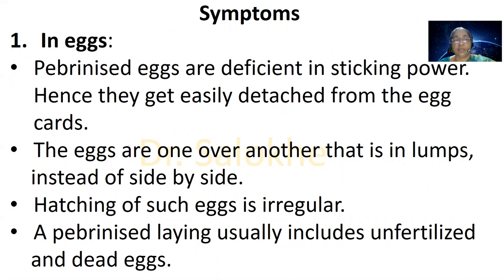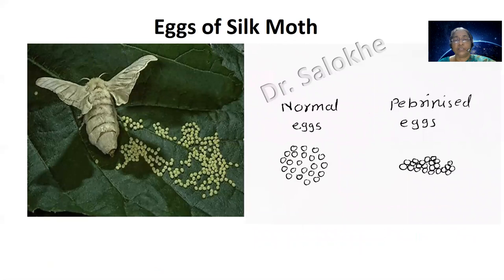Symptoms in eggs: pebrinized eggs are deficient in sticking power, and hence they get easily detached from the egg cards. The eggs lie one over another in lumps instead of side by side. Hatching of such eggs is irregular. A pebrinized laying usually includes unfertilized and dead eggs. Normal eggs lie side by side, while pebrinized eggs lie one over the other forming lumps.